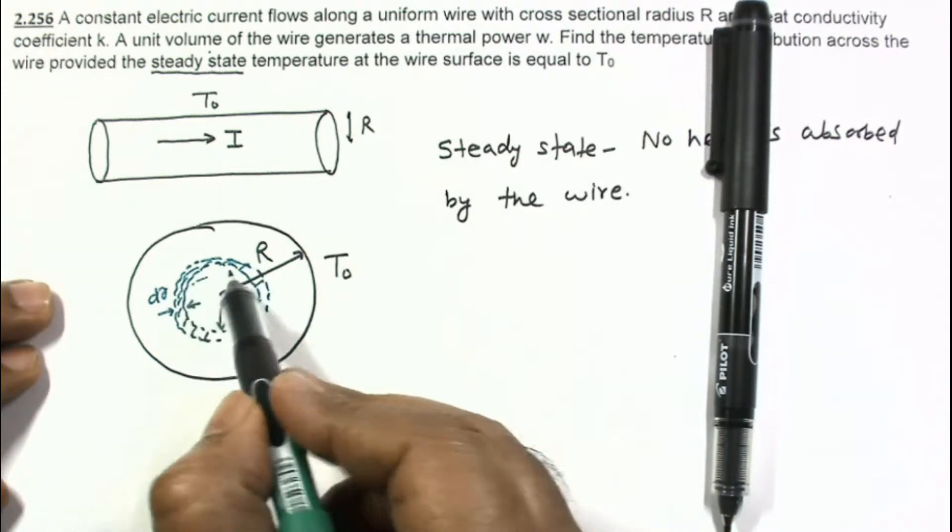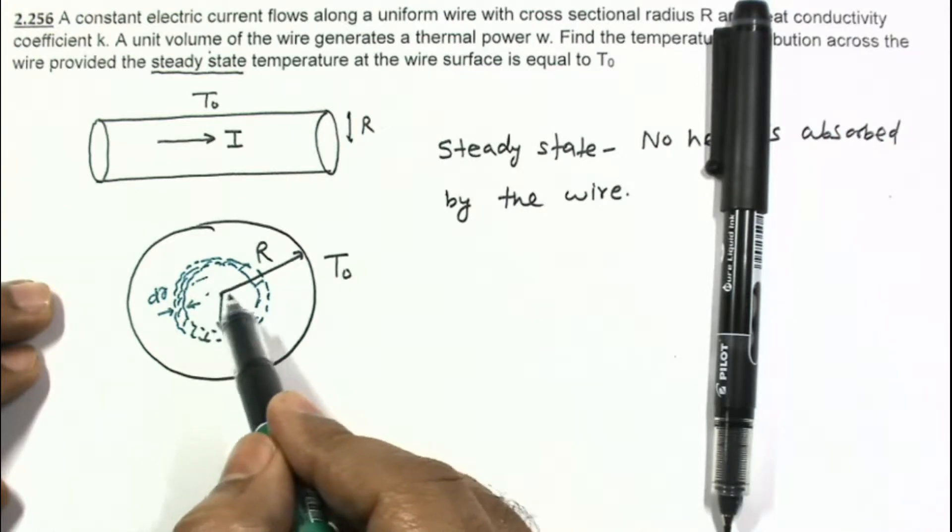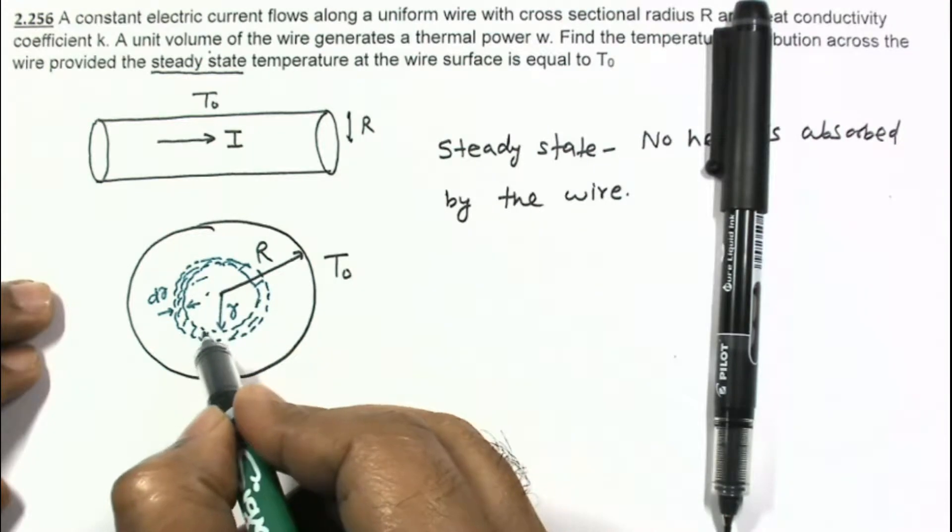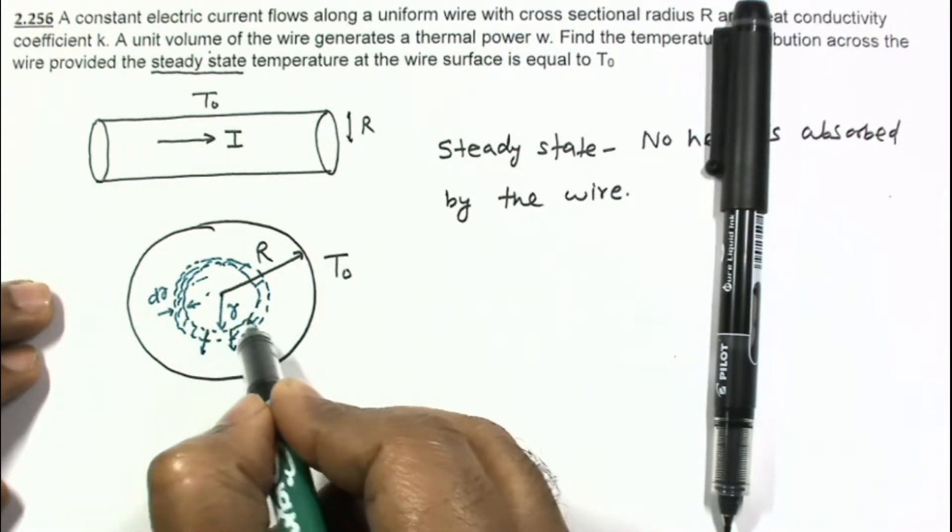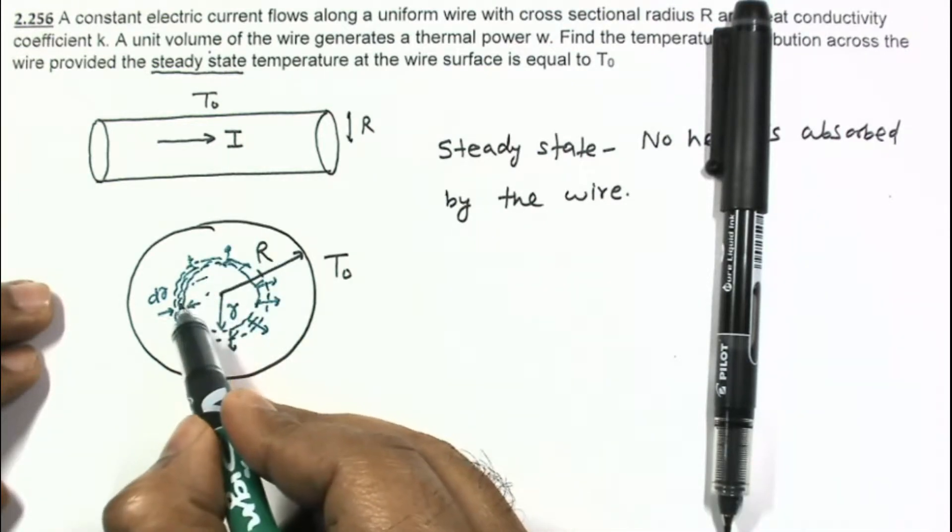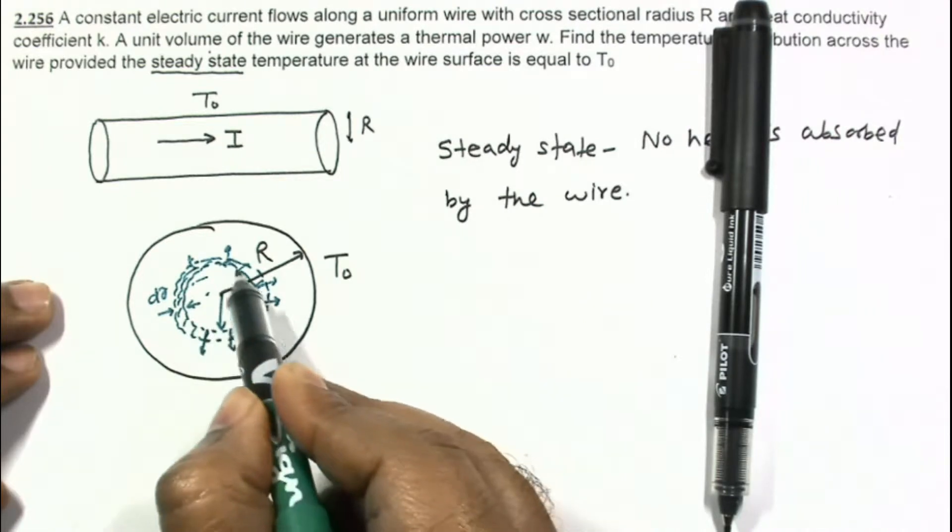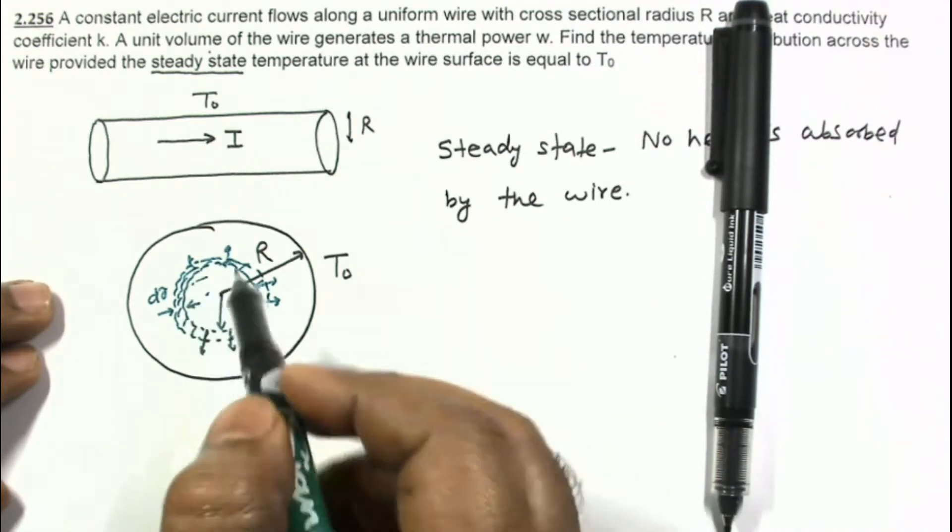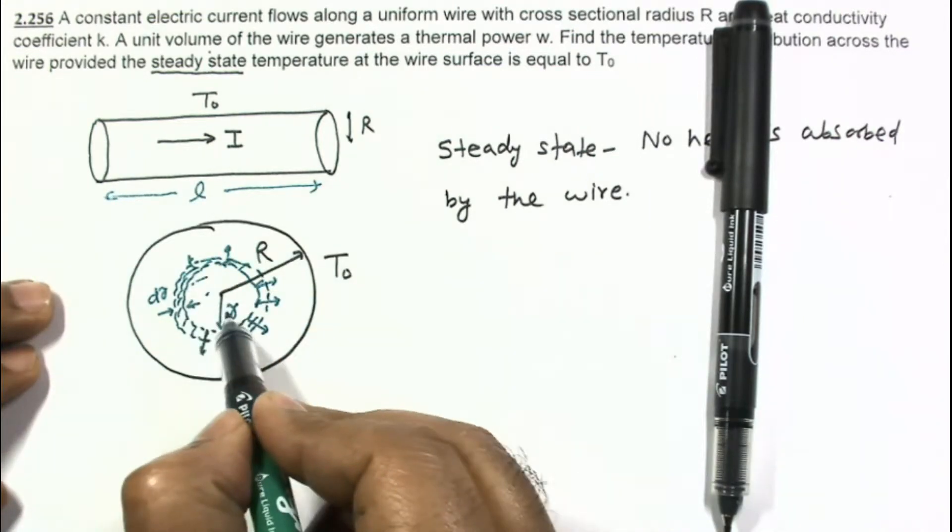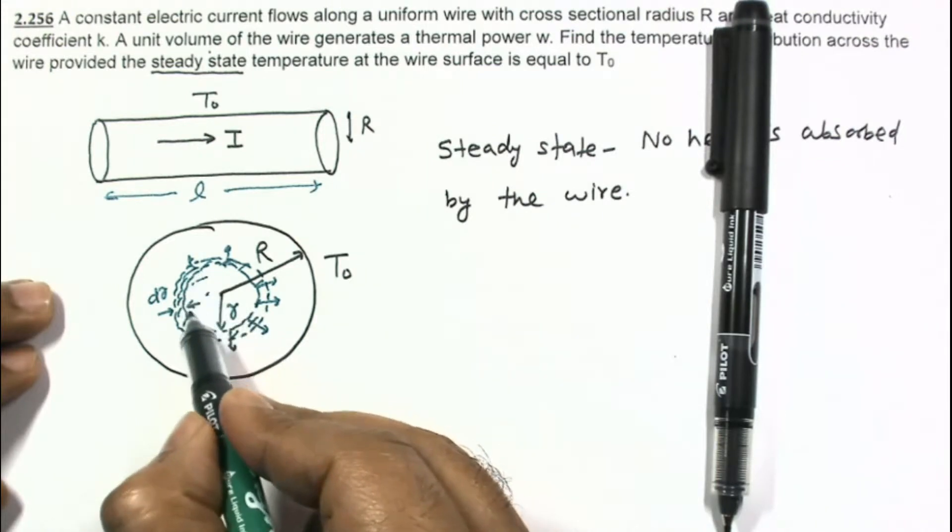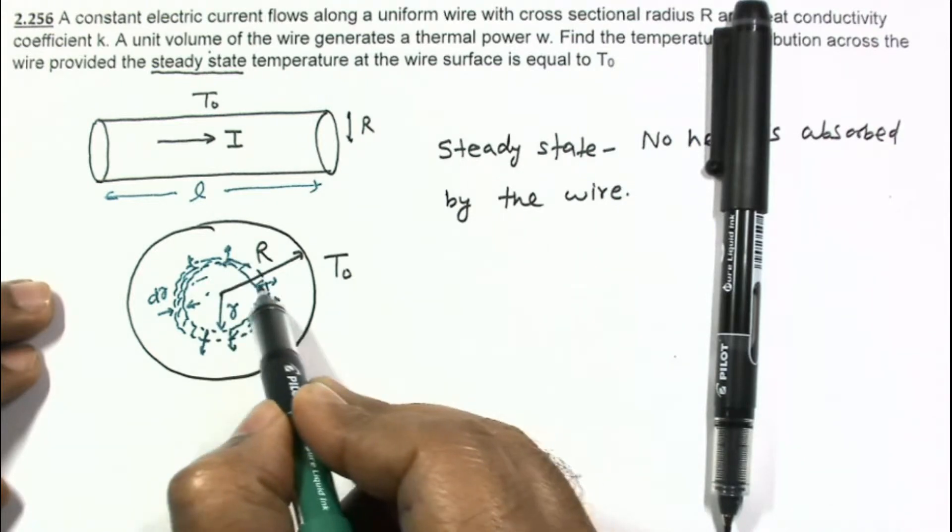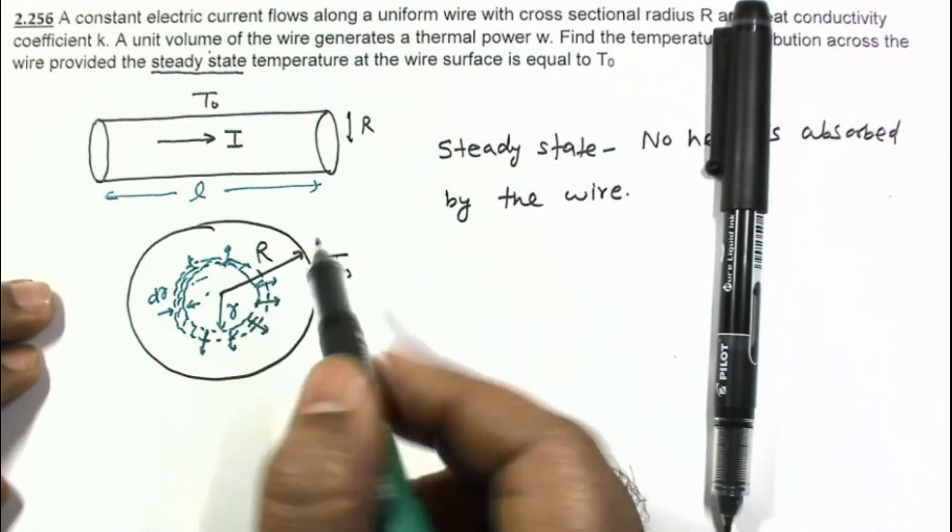In this volume, the heat is being generated and that heat is conducted like this. Whatever heat is generated in this volume, this volume is πr² and let's say the length of the wire is equal to L. So this volume will be πr²L. Whatever heat is generated in this volume, it must be conducted through this element without any absorption for steady state.